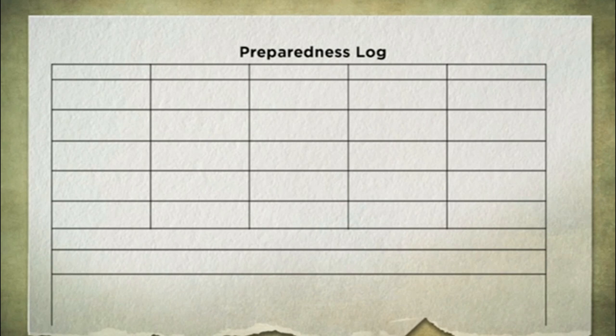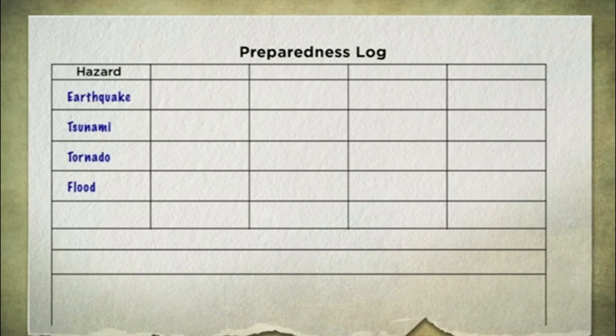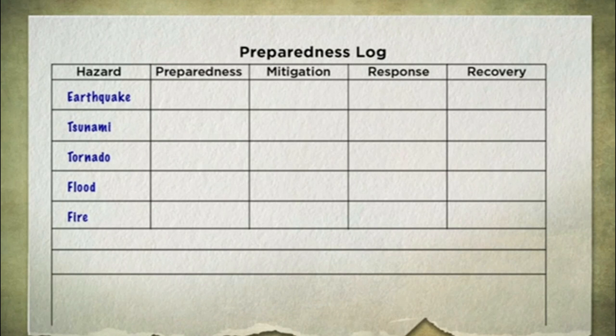Let's pause here. I called the National Preparedness Goal a recipe. Here's a challenge for you: as you go through this course, keep a preparedness log. Start that log with a table listing the potential hazards down the left side of the page, then with a column for preparedness, another for mitigation, another for response, and another for recovery. For each hazard you identify, see what preparedness actions you can take in each category.